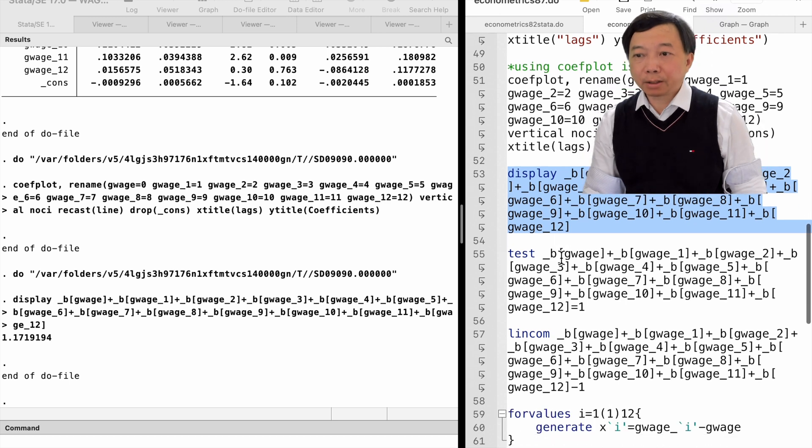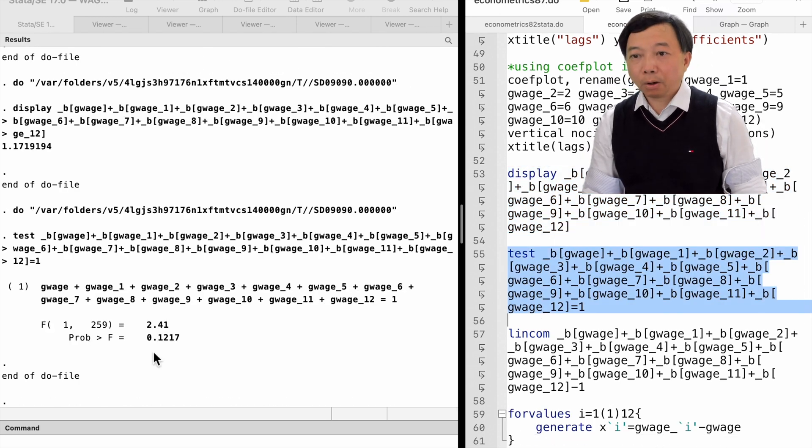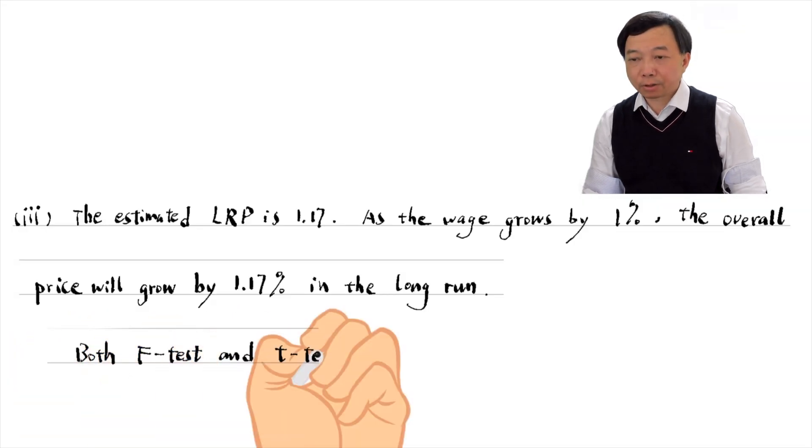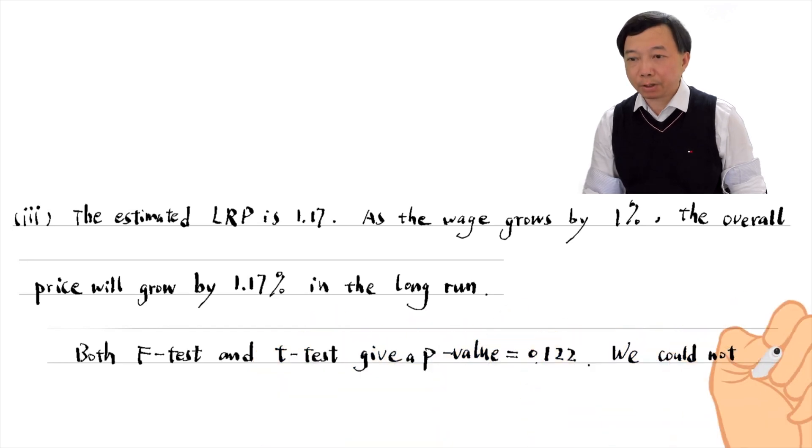We can use the test command to do the F-test, or use the lincom command to do the t-test for the null hypothesis that the long-run propensity is 1. Both tests suggest that we fail to reject the null hypothesis at even the 10 percent level.